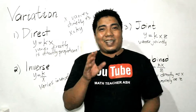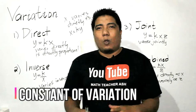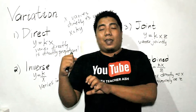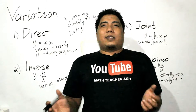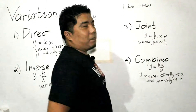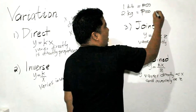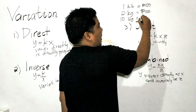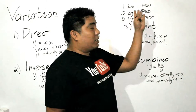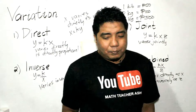The letter k is not a variable — it is the constant of variation, a fixed value. For example, if the cost of 1 kilo of rice is 50 pesos, then 2 kilograms costs 100 pesos and 10 kilograms costs 500 pesos. As weight increases, cost also increases — a direct variation. The constant k here represents that fixed price-per-kilo relationship.